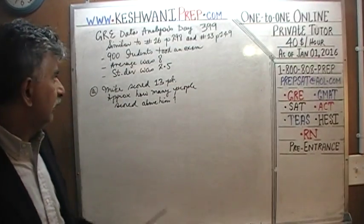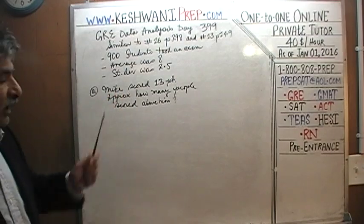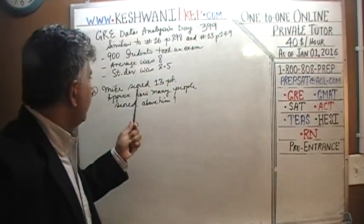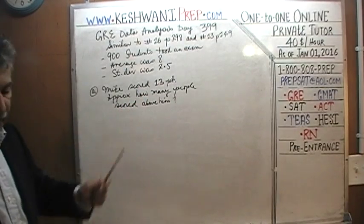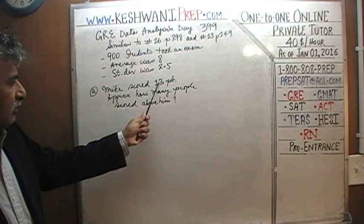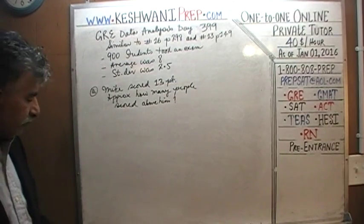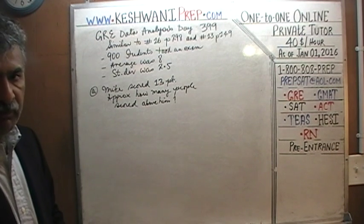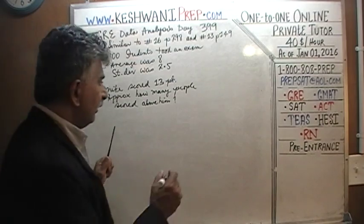We are told that 900 students took an exam, the average score was 8 points, and the standard deviation was 2.5. The question is: if Michael scored 13 points, approximately how many people scored above him? This is a very simple, straightforward problem if we understand the distribution.